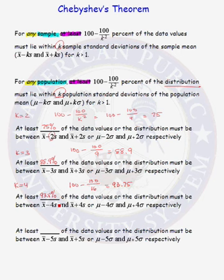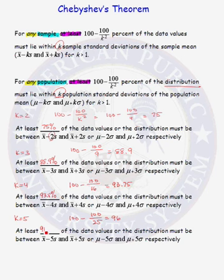What percentage of the data lies within five standard deviations of the mean? In that case, k equals 5, and we need to figure out 100 minus 100 over 25, and that equals 96. So at least 96 percent of the data values from any sample or any population must lie within five standard deviations of the mean.